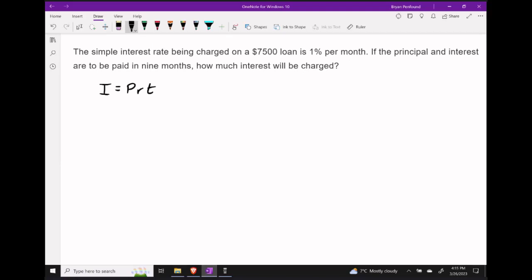Here I think it makes sense to use the I equals PRT formula since we're being asked about how much interest. We know that the principal balance of this loan is $7,500.